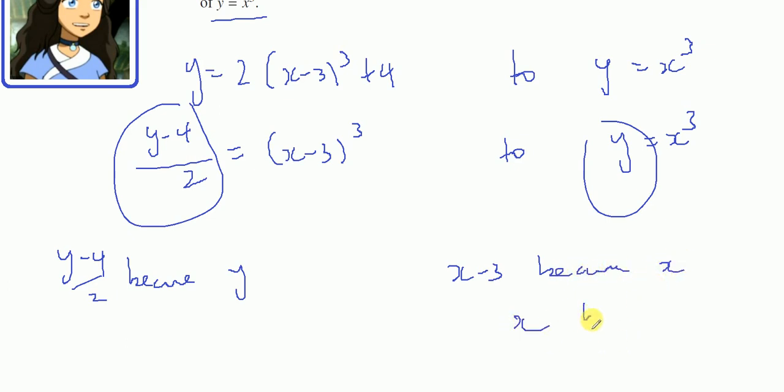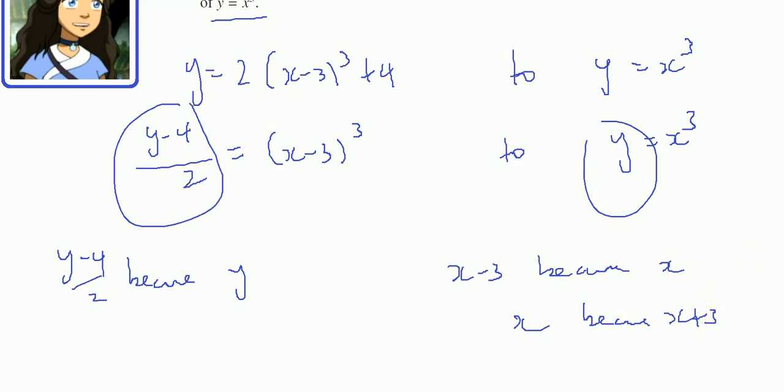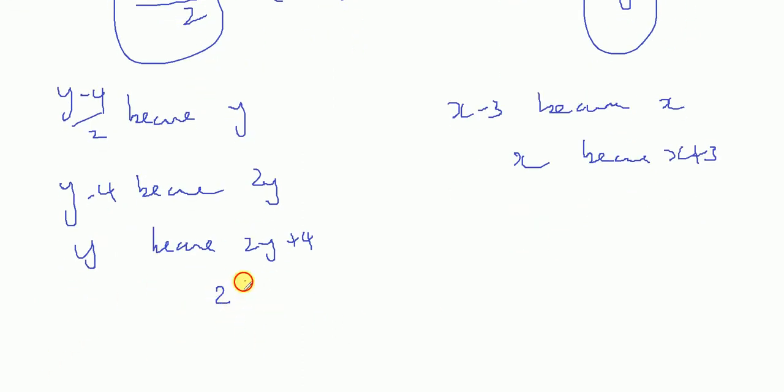So x became x plus 3, and y minus 4 became 2y. So y became 2y plus 4, which is 2y plus 2. Now I'm ready to read all the transformations.